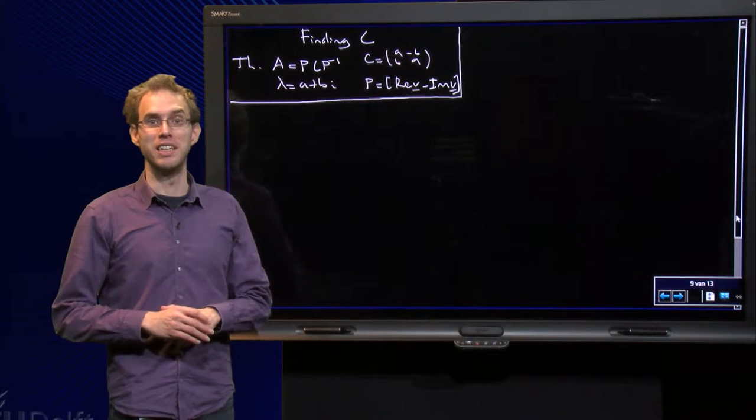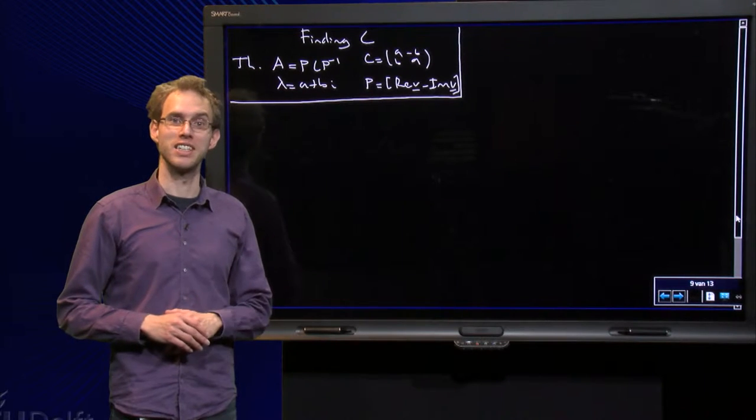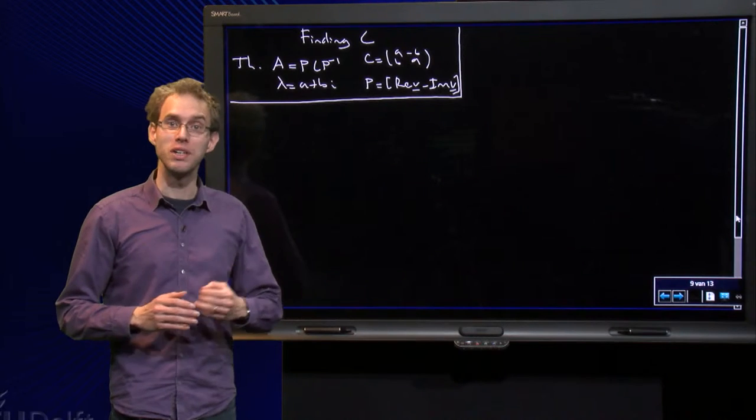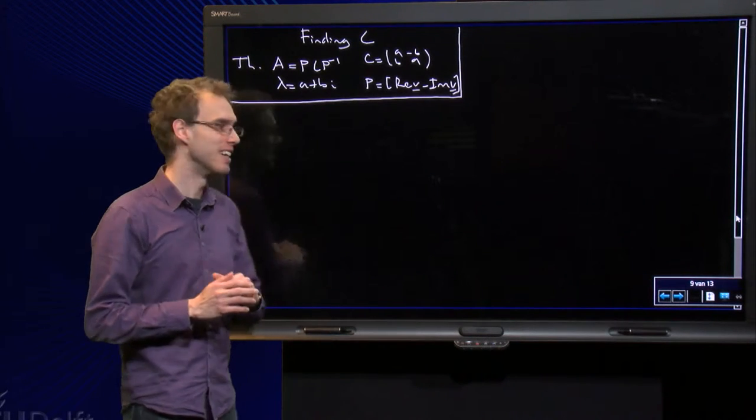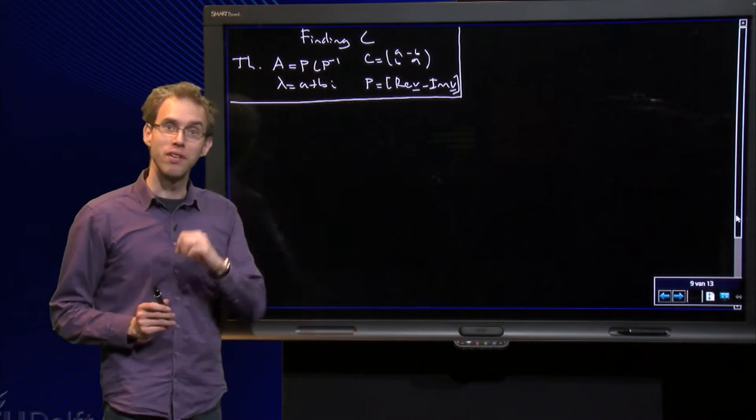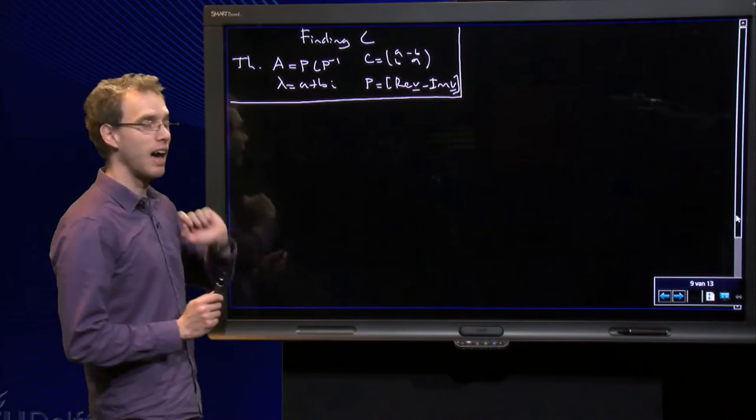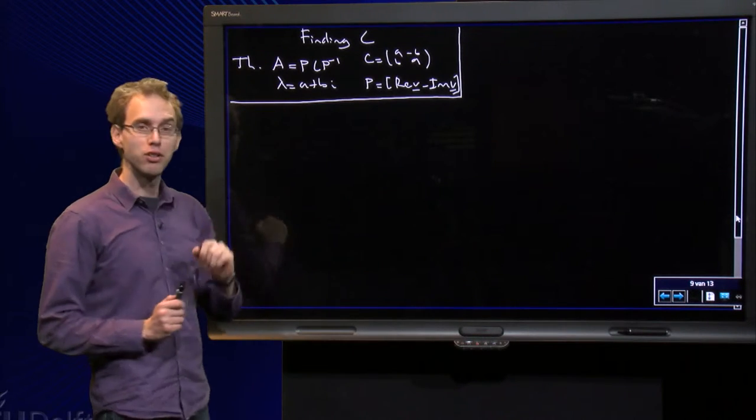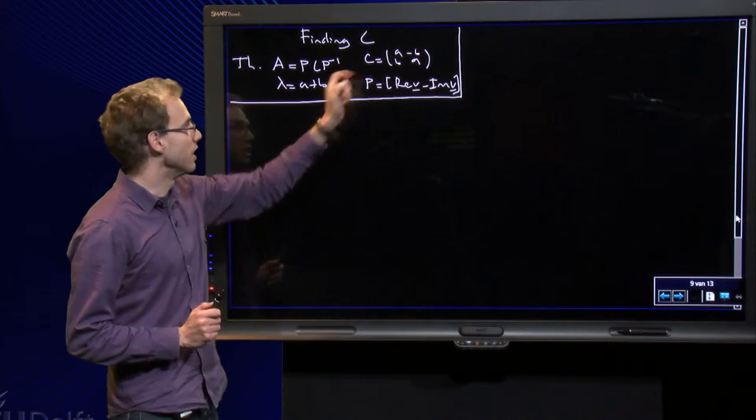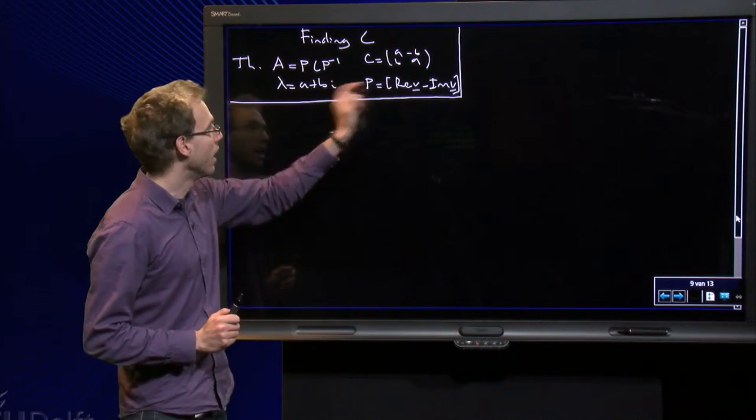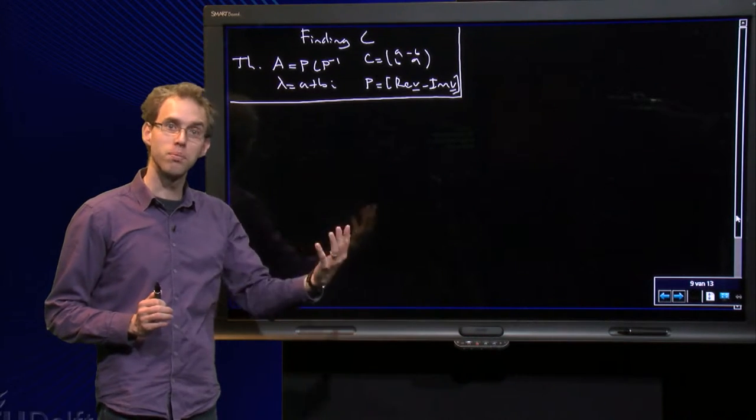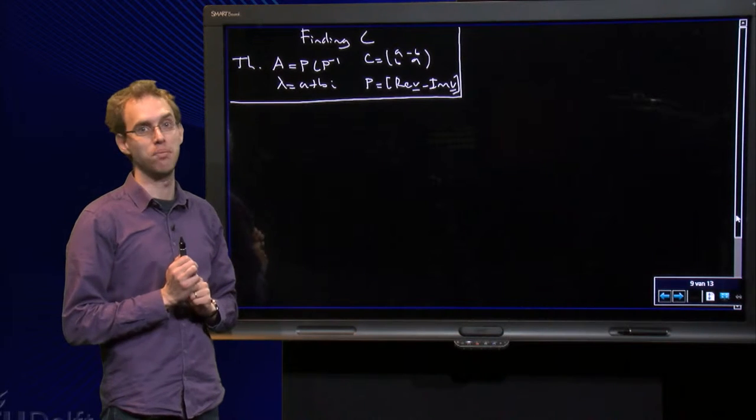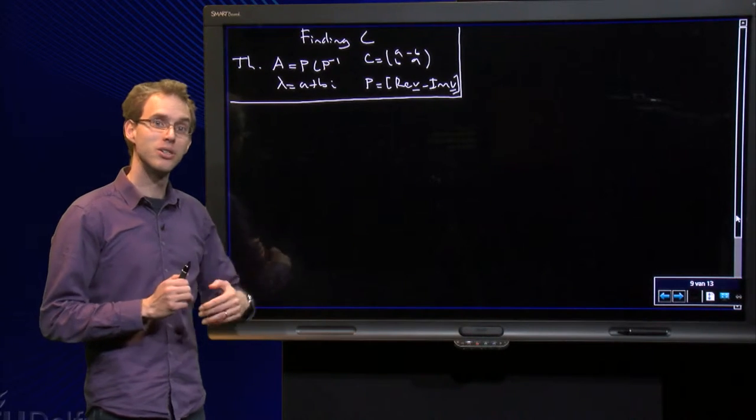Is it hard to find a C-matrix which is similar to a matrix A? We have a theorem telling us how to do it, so let's just try. Suppose we have an A-matrix with eigenvalue lambda equals a plus bi. Then I know A equals PCP inverse, where C equals a on the diagonal with b and minus b, and P uses the imaginary part of the eigenvector v. So let's do an example.